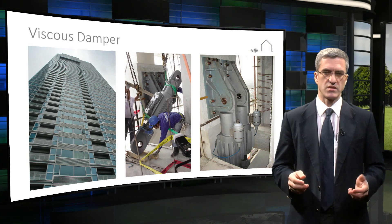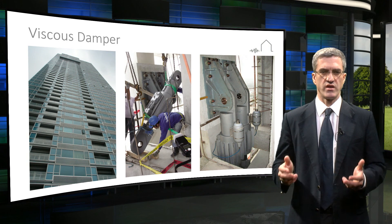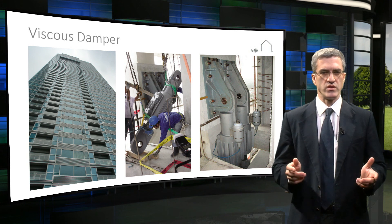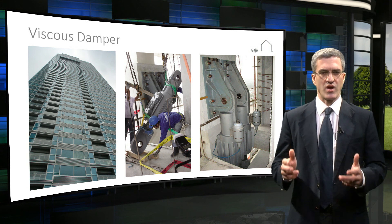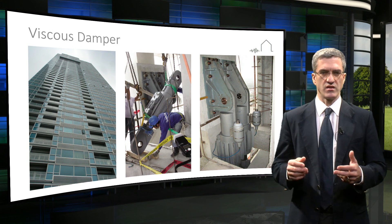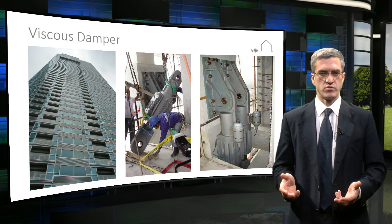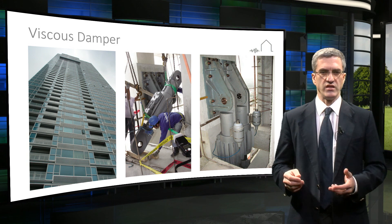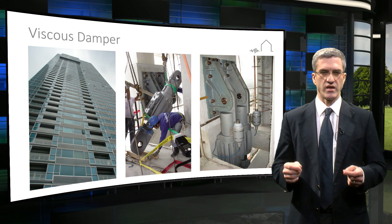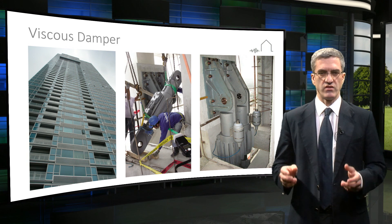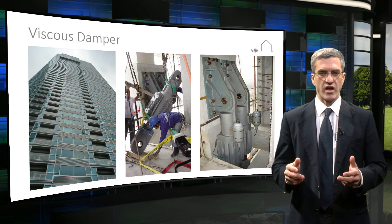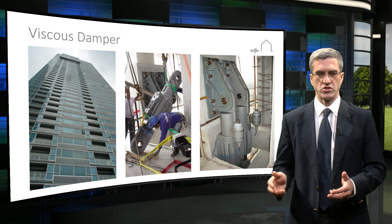Viscous dampers can be installed in numerous arrangements such as damped outriggers. The dampers minimise wind-induced vibrations as well as seismic demands. Viscous dampers are mechanical devices like car shock absorbers which provide resistance related to the relative velocity between their ends. They can dissipate energy even at very small movements and have the potential to keep a structure elastic and prevent permanent deformations.